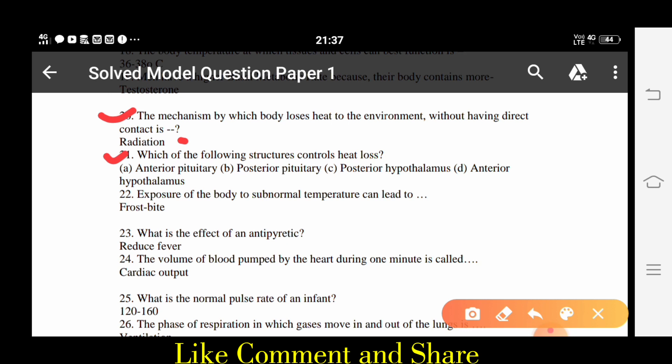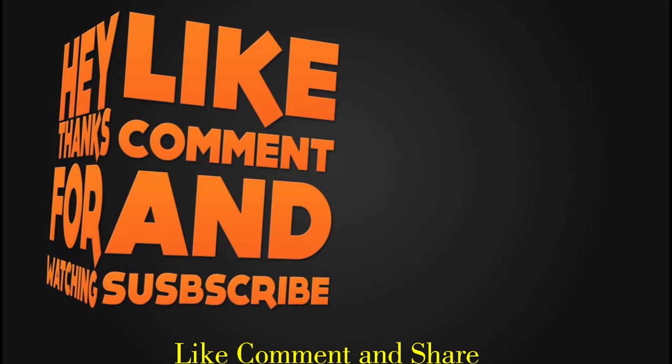20. The mechanism by which body loses heat to the environment without having direct contact is radiation. 21. Which of the following structures controls heat loss? A. Anterior pituitary.